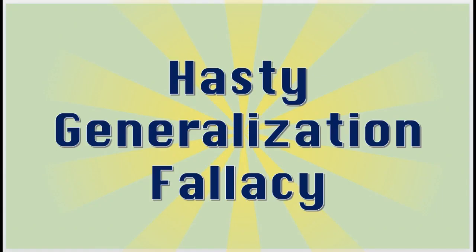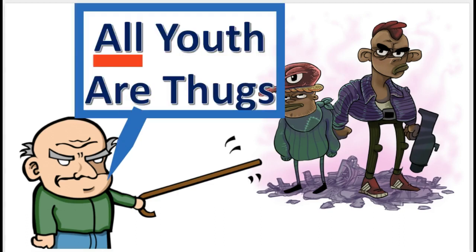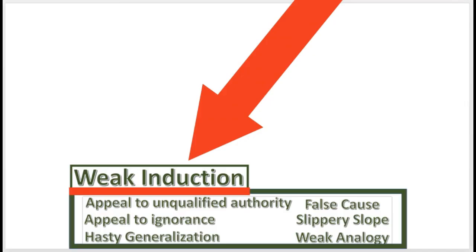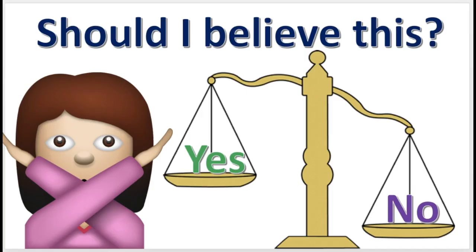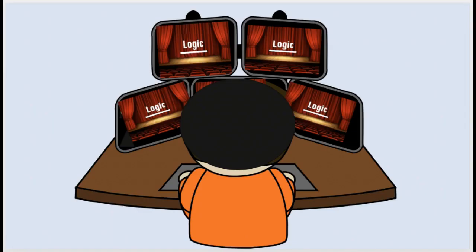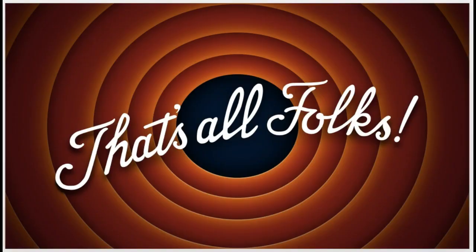Remember, a hasty generalization proceeds from a statement about a particular sample to a claim about the entire group. It's a fallacy of weak induction, which means the premise does not provide enough support to believe the conclusion. See our other videos on logic, comment, like, share, and subscribe, and have a great day.